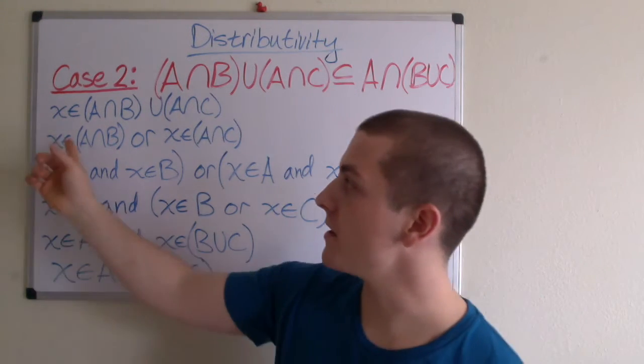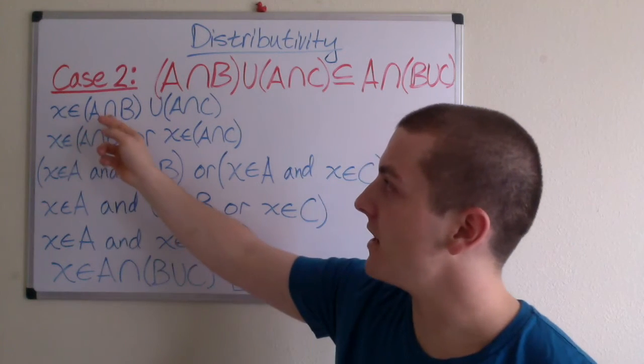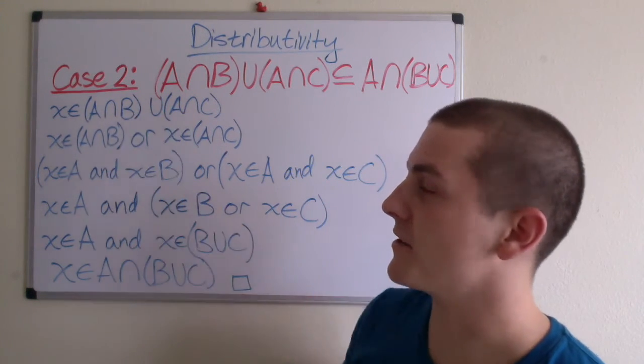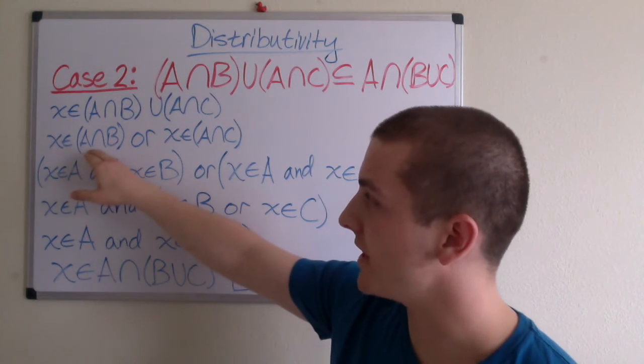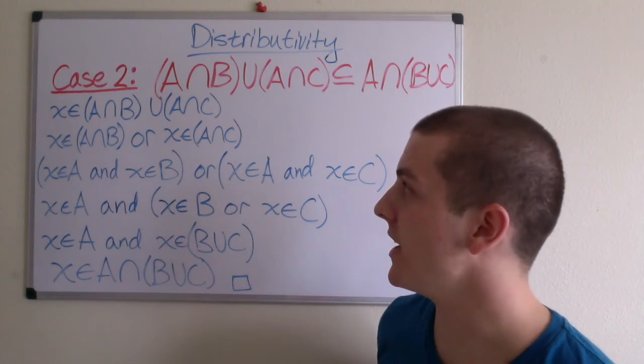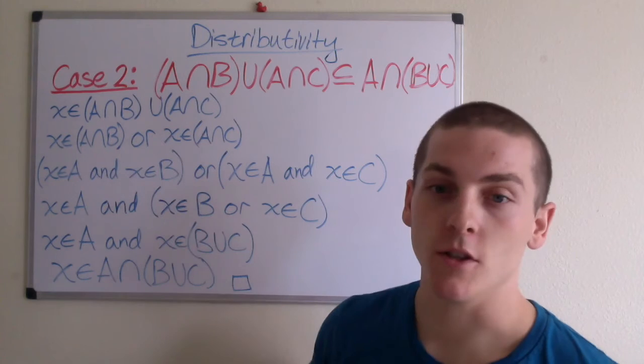So let's start by saying that suppose that X is an element of A intersection B union A intersection C. Then we know that X is an element of A intersection B or X is an element of A intersection C. And we know this because of the definition of the union.